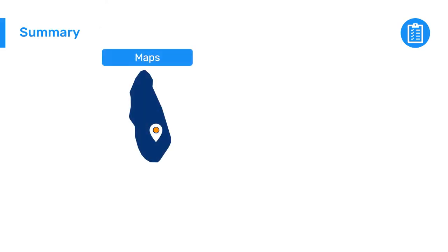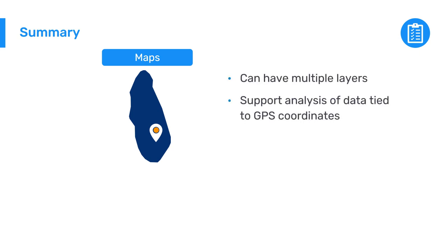In summary, you can use DHIS-2 to create maps made with multiple layers to support analysis of data that is tied to GPS coordinates. The main layers used to view aggregate data in DHIS-2 maps are the thematic, facility, and boundary layers.